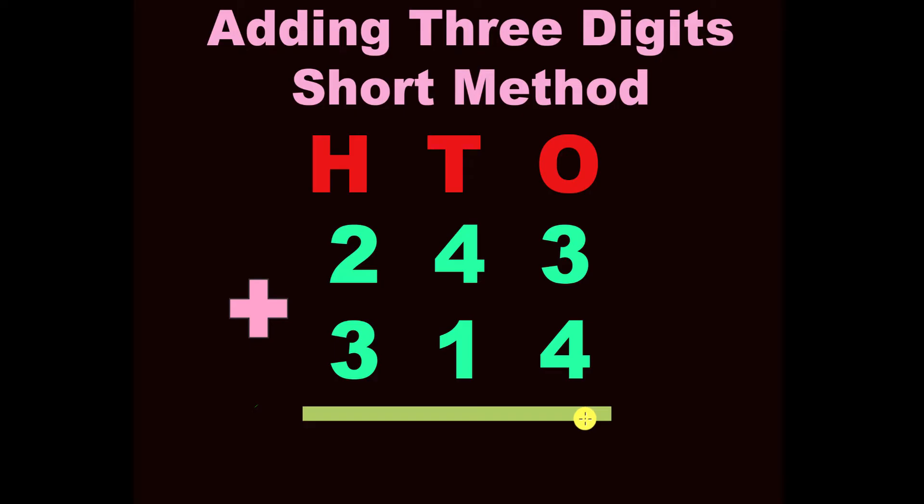We have ones, tens, and hundreds place. We know that our first tip to adding multiple digit problems is you begin to the far right with adding, and you travel to the far left. Okay, so you begin with the ones place when you are adding.